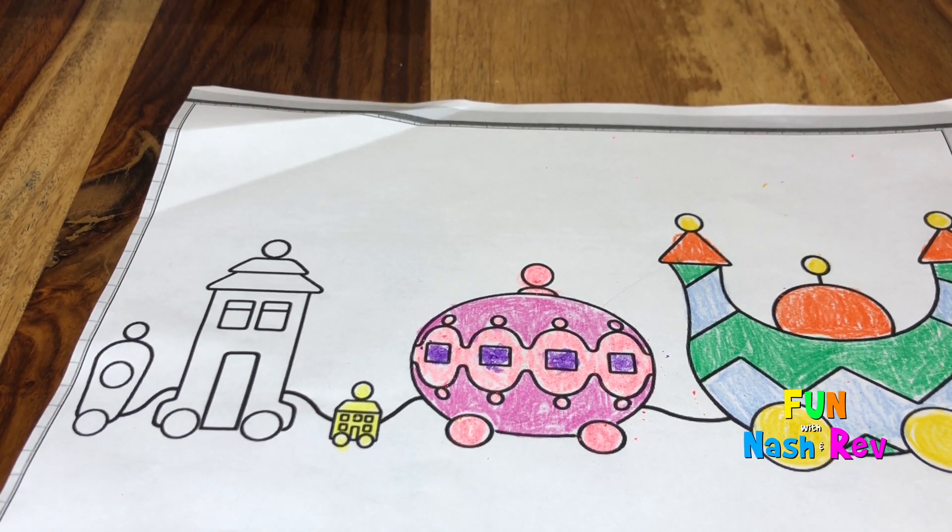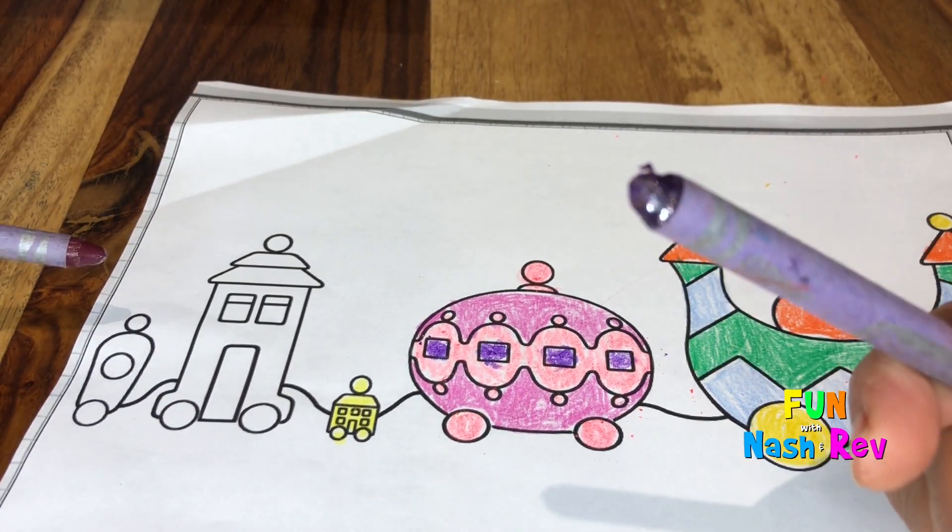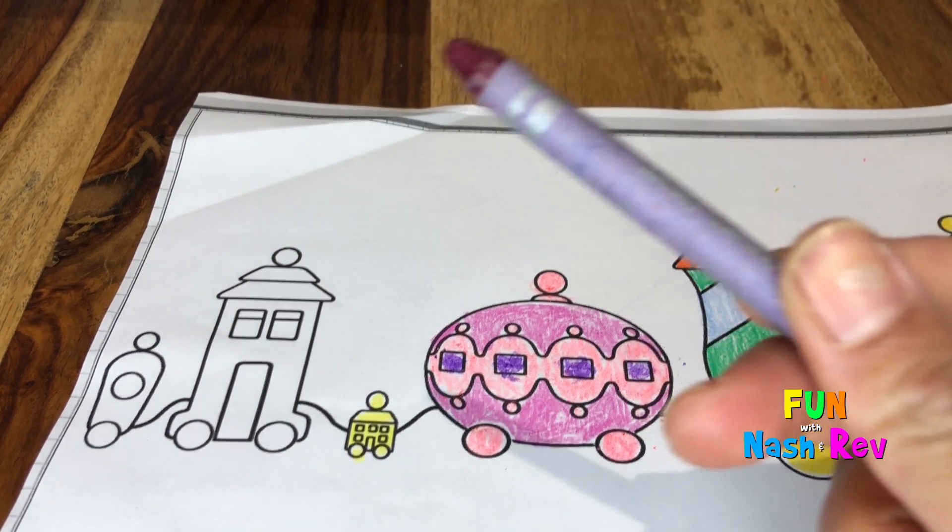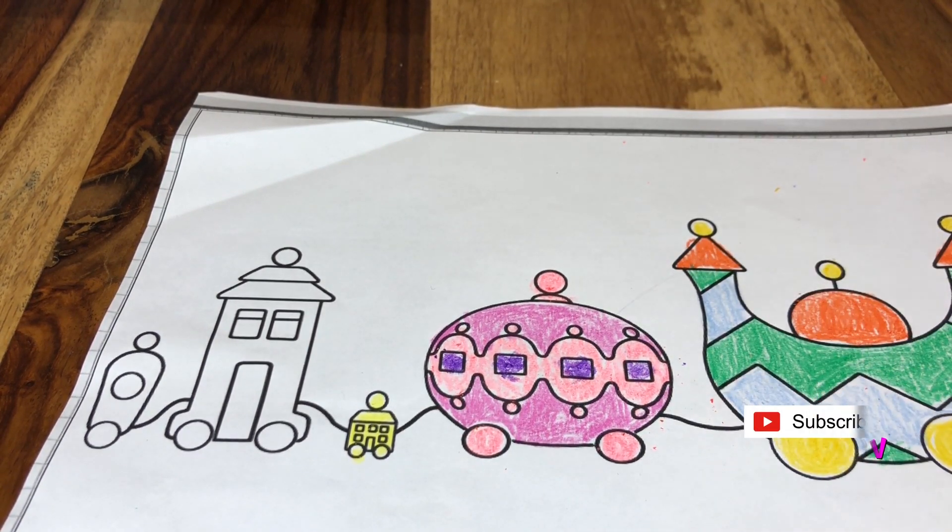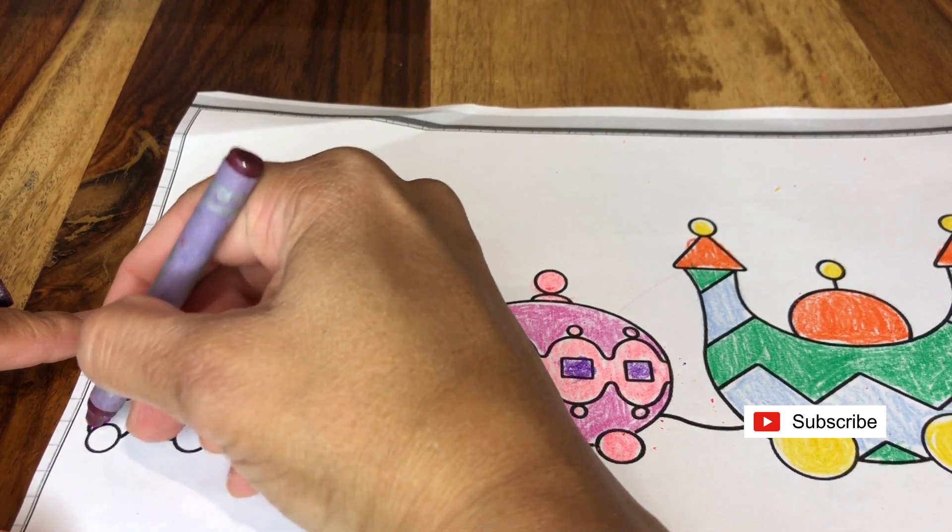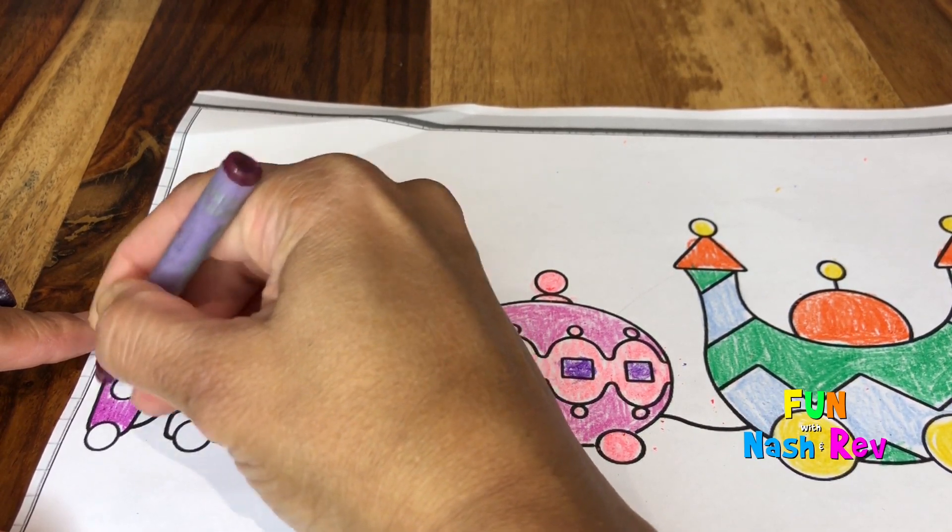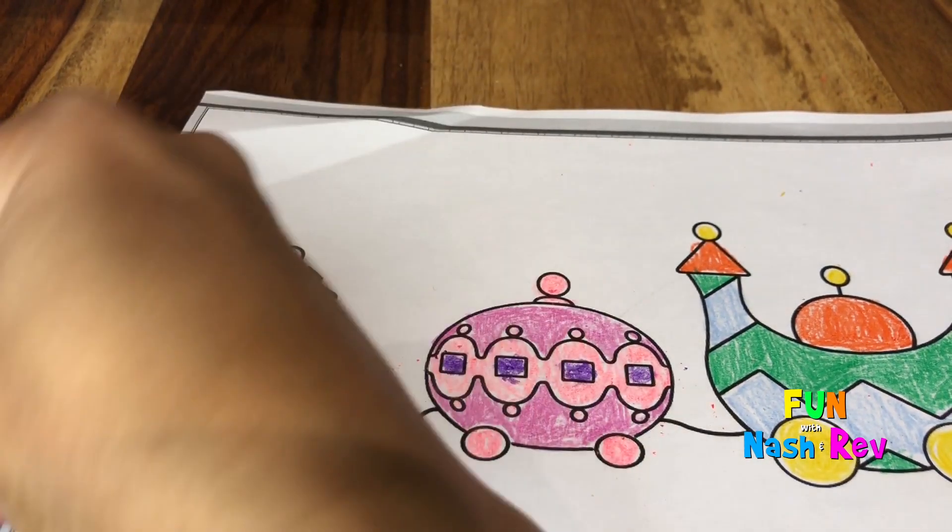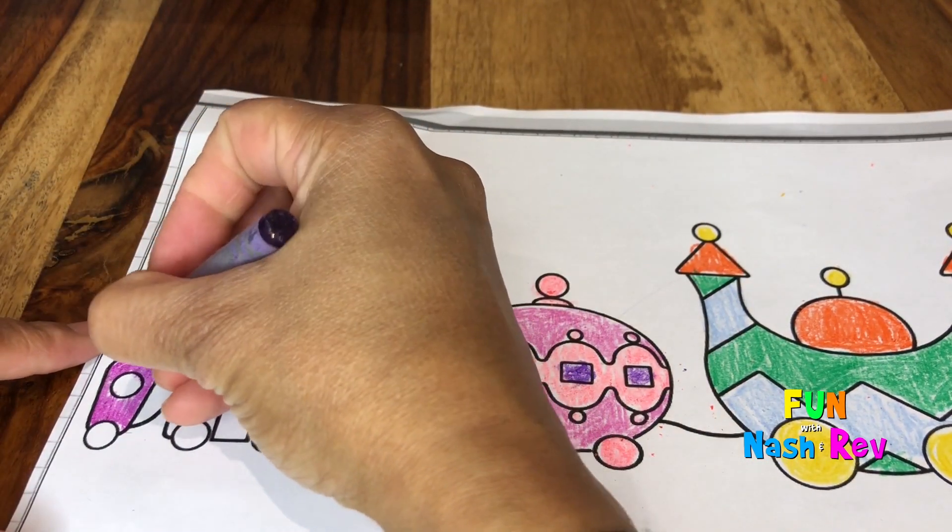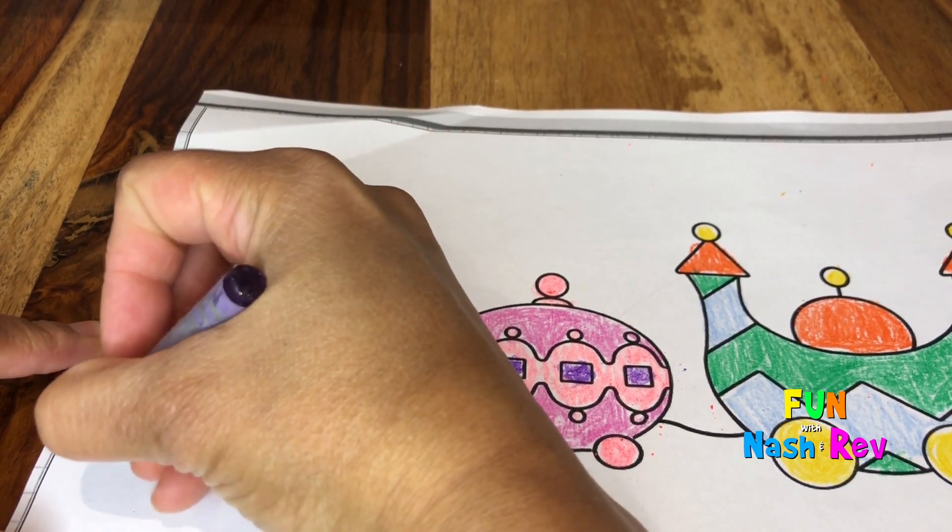Now these colors are really cool because they're sparkly. I don't know if you can see the sparkles. This one too, sparkly. Let's color this one with the sparkly crayons. Got a lot of pinks and purples, different shades of pinks and purples going on today.